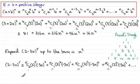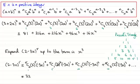Working this out: 2 to the power 5 is 32, and anything to the power 0 is 1, and 5C0 is 1 — so you're just going to get 32 for that first term. For the next one: 5 multiplied by 2 to the power 4, which is 16, and you've got (−3x) — so it's going to be a negative term — and if you work that out you end up with minus 240x.